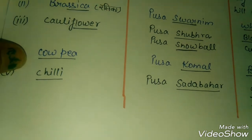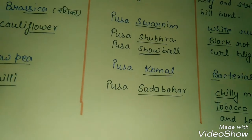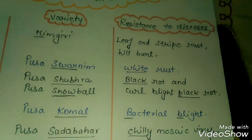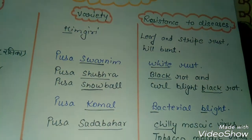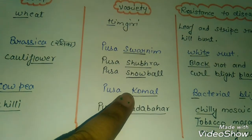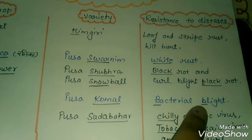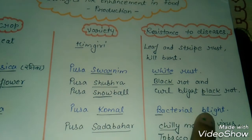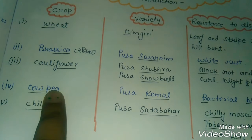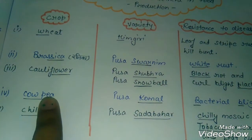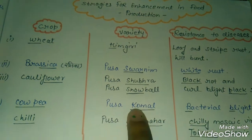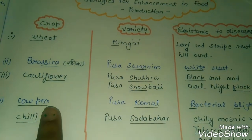Next crop is Cow Pea. Its variety is Pusa Komal, and its disease resistance is bacterial blight. How do we remember this? It is very easy — Komal is a baby's name, and the first letter of bacterial blight is B, like 'baby'. So: a baby named Komal has a cow. This story helps you remember Cow Pea, Pusa Komal, and bacterial blight together.